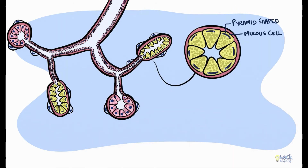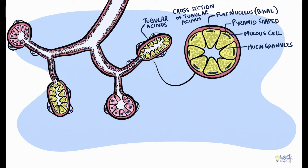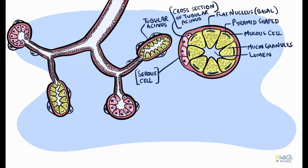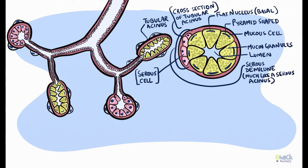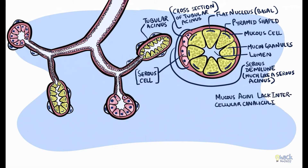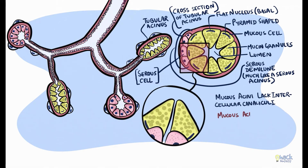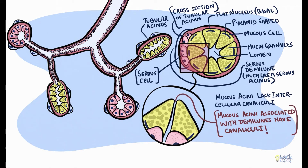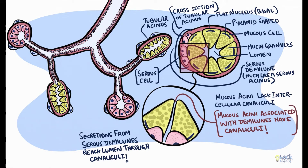Mucous acinar cells are also pyramidal cells with apical cytoplasm packed with mucin granules and a flat nucleus in the basal cytoplasm compressed by mucin granules. These cells are housed in tubular secretory end pieces, and a cross section would show mucous acinar cells surrounding a central lumen. Sometimes mucous acini may be associated with serous cells arranged on them in the shape of a crescent — this is called a serous demilune. Unlike serous acini, mucous acini lack intercellular canaliculi. However, those mucous acini associated with serous demilunes have canaliculi, and the secretions of these serous demilunes reach the lumen through these canaliculi.